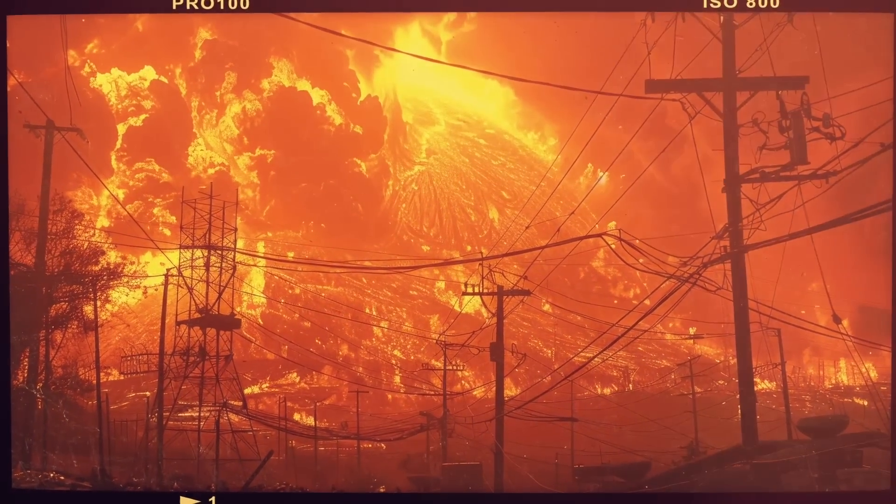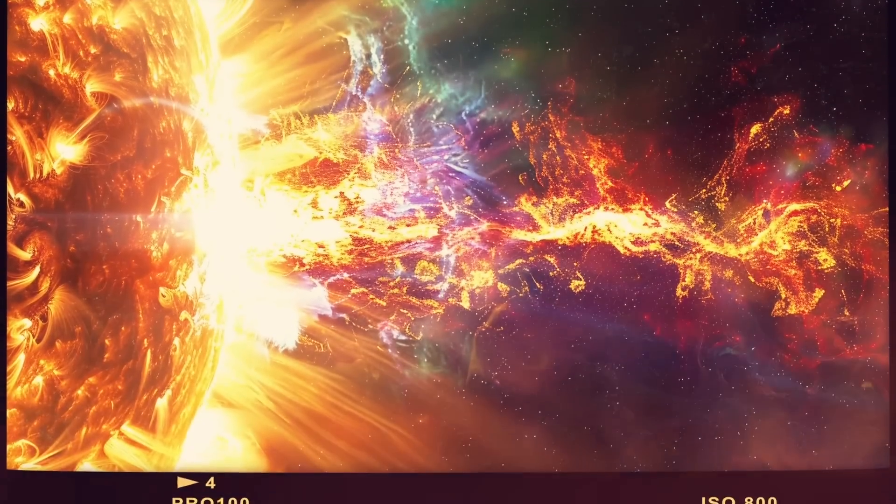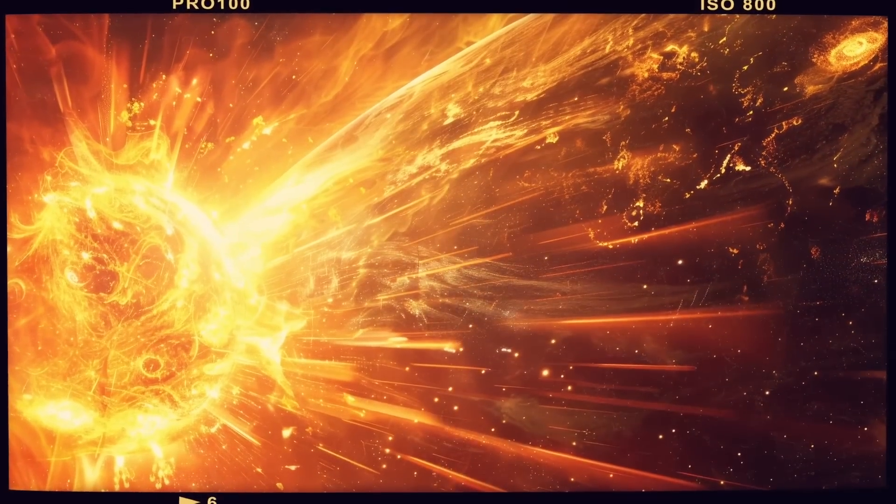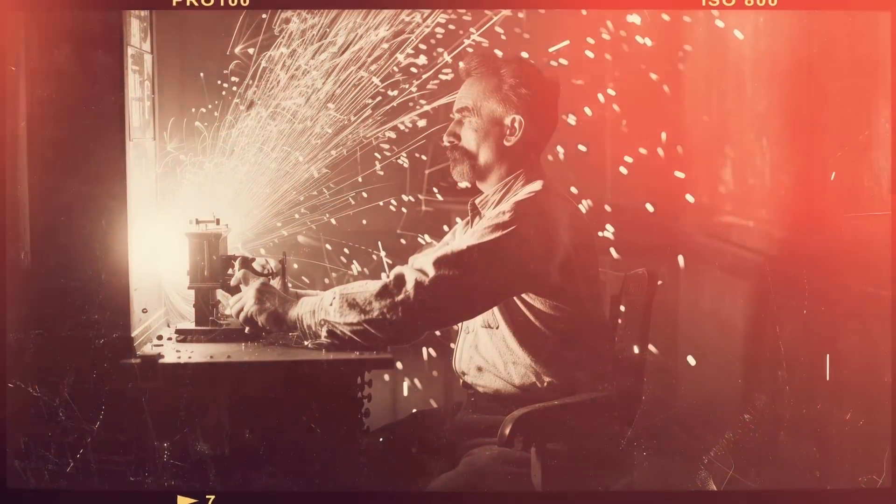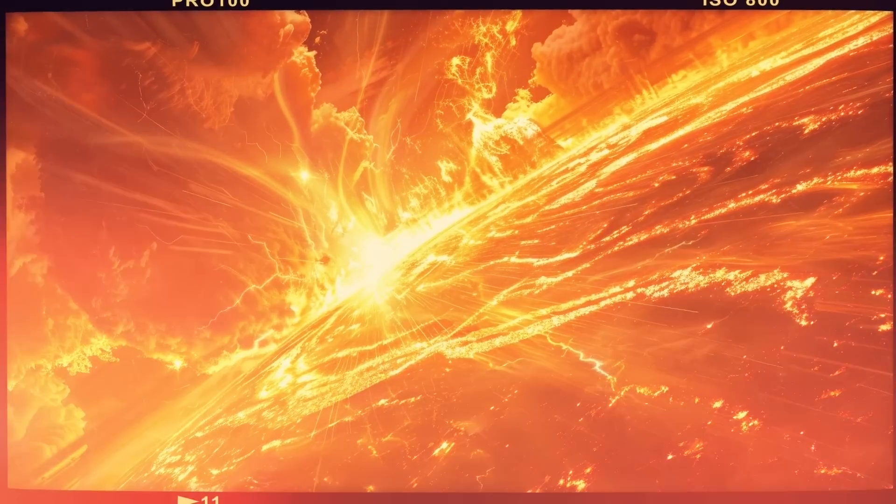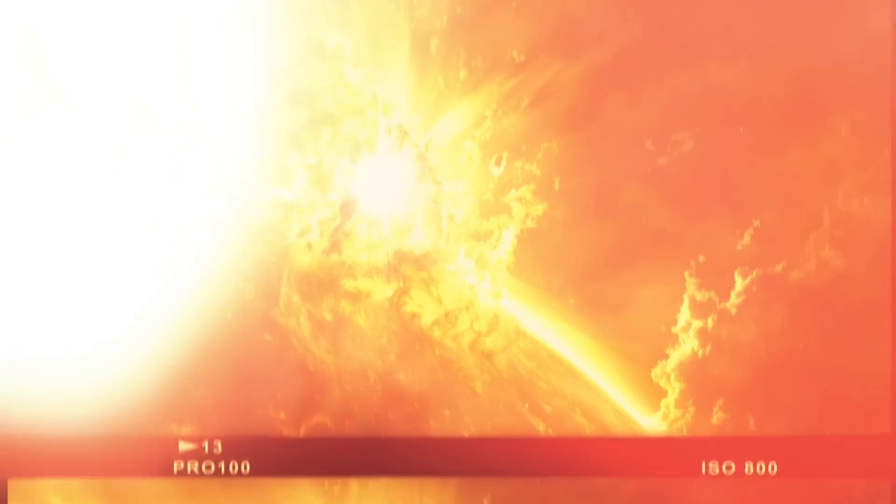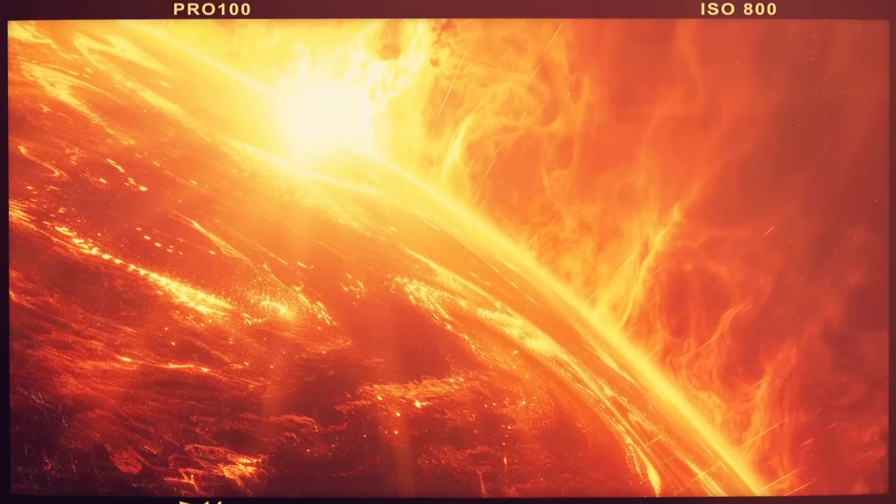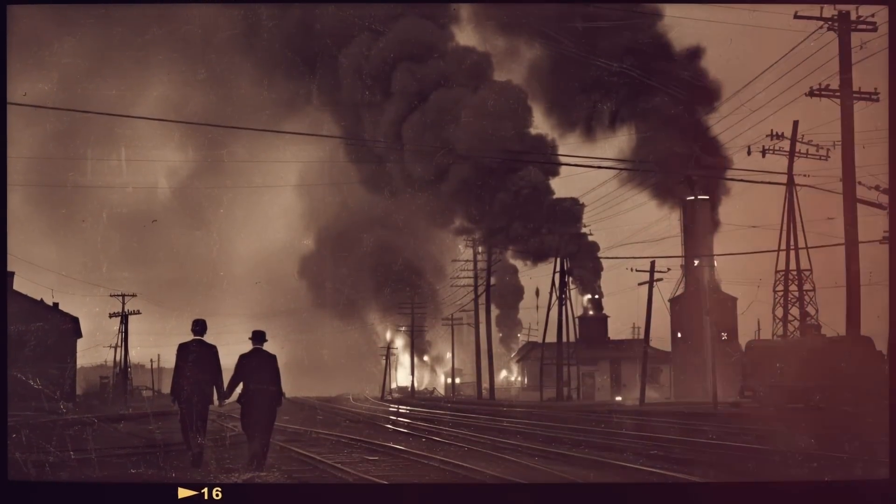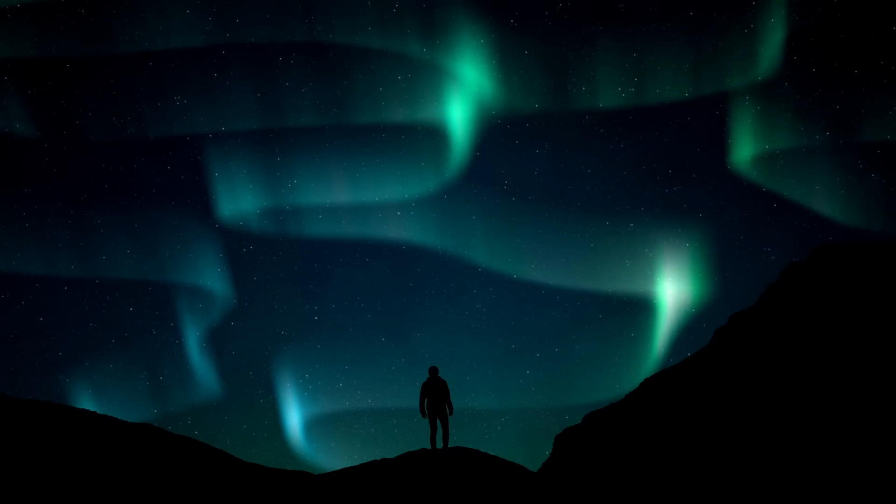Telegraph systems, which were the backbone of global communication at the time, experienced severe malfunctions. Sparks flew from telegraph machines, operators received electric shocks and some telegraph stations even caught fire. In some cases, the induced currents were so strong that telegraph operators were able to send and receive messages with their telegraph keys even after disconnecting the batteries.